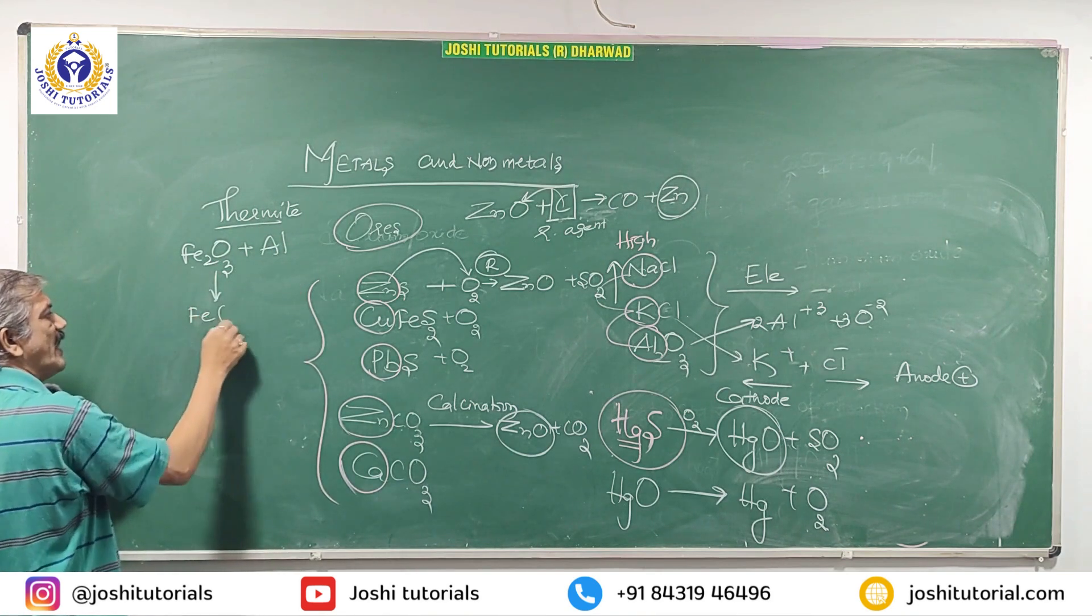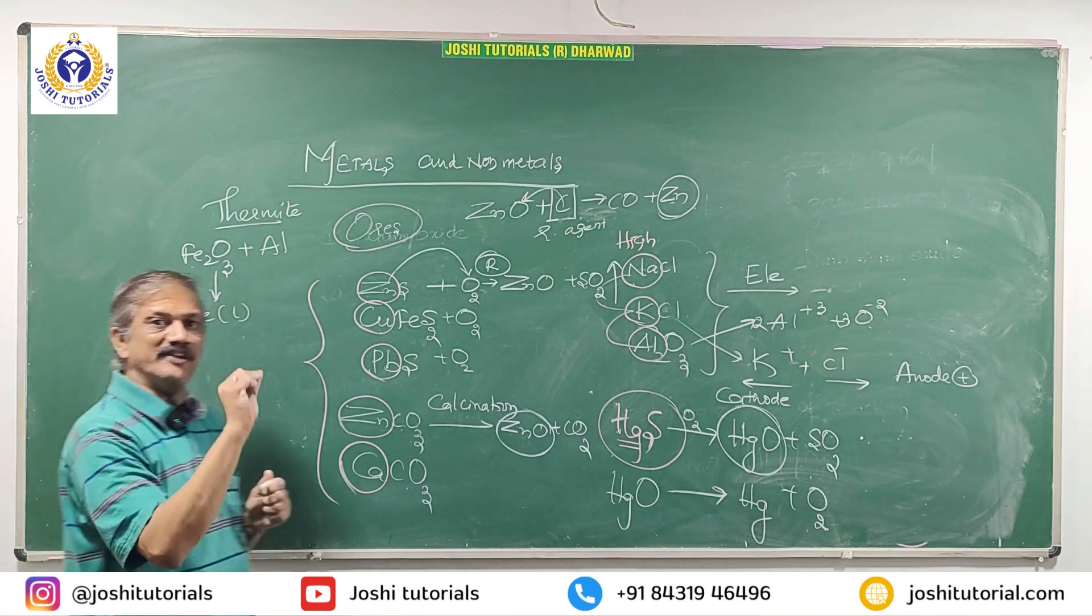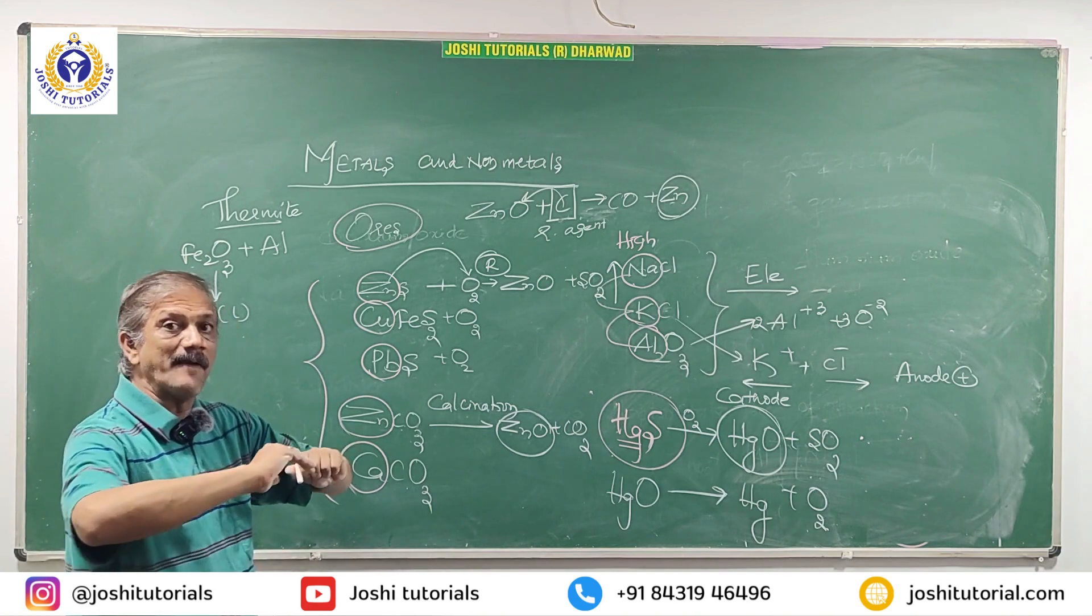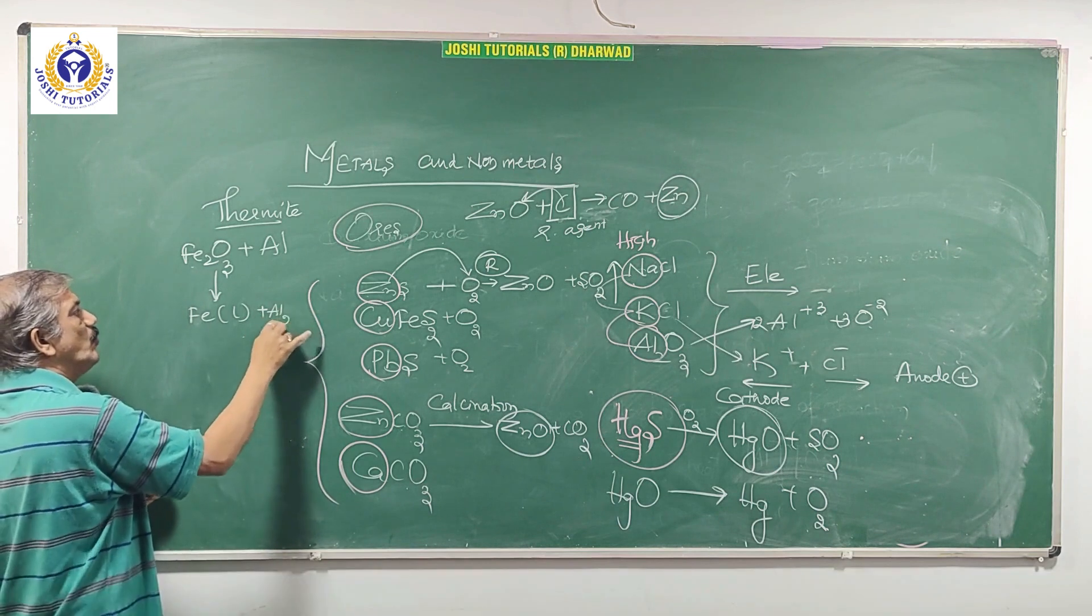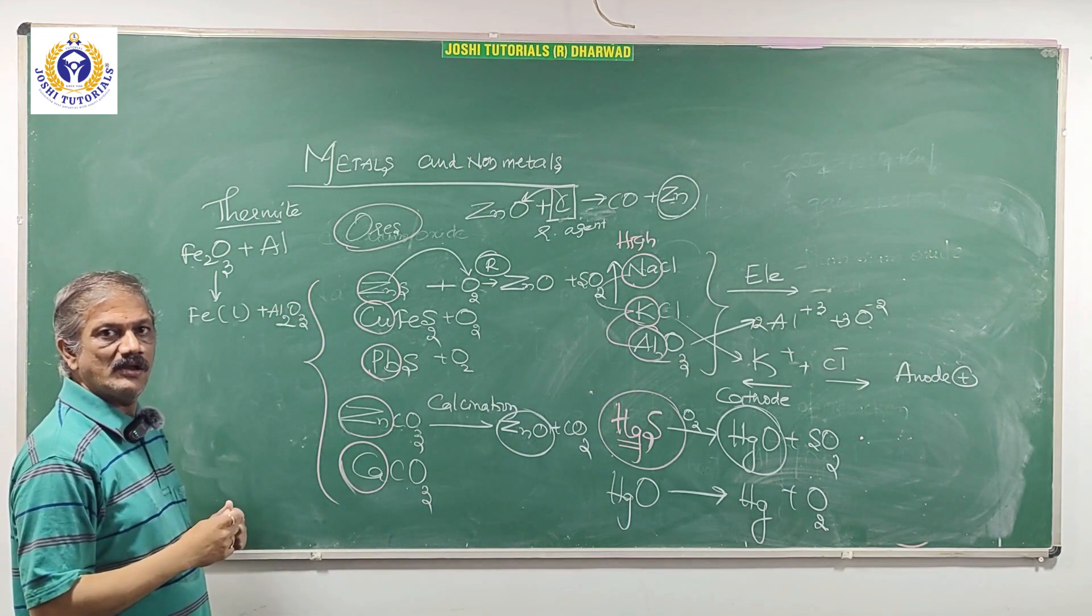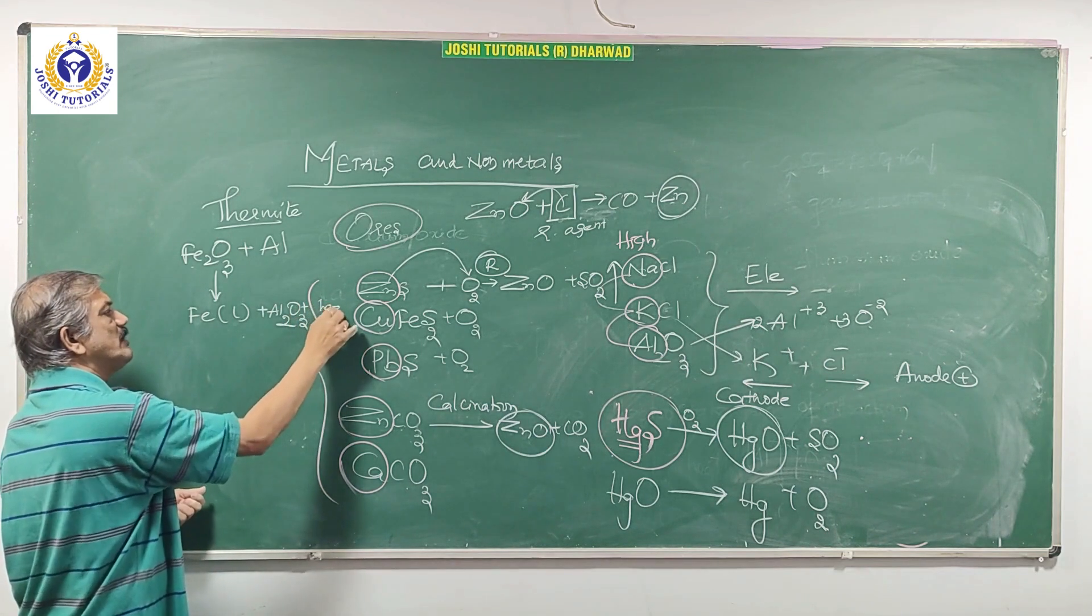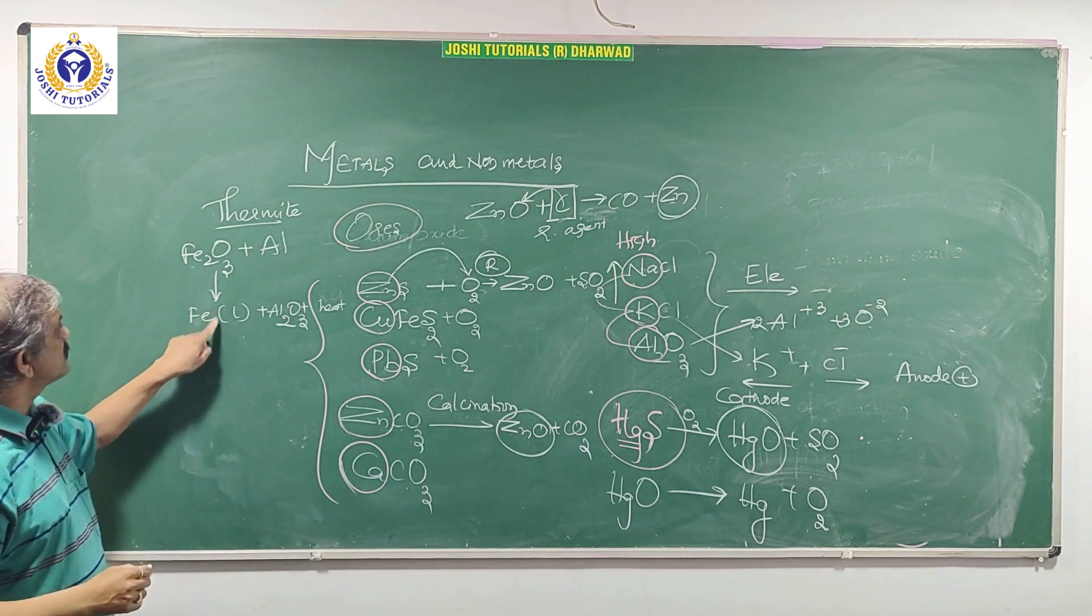Thermite, therm means heat. What happens? Fe2O3 forms Fe. I have written here L, means liquid. It forms liquid. You can easily move the liquid and cover the gap for welding. And what you else get? Al2O3 aluminum oxide. Here along with that, you are going to get more heat. So it is called thermite process.